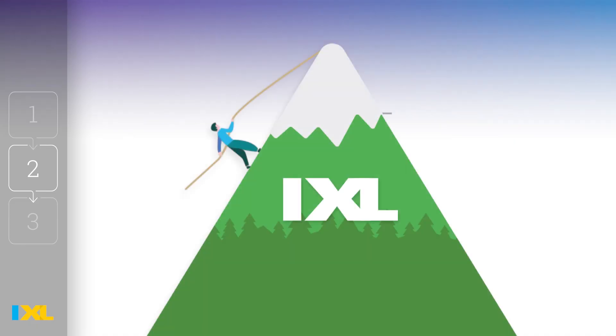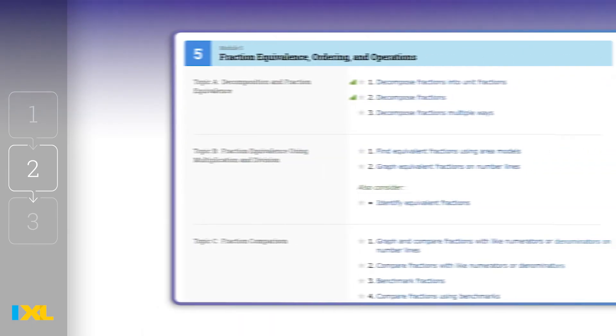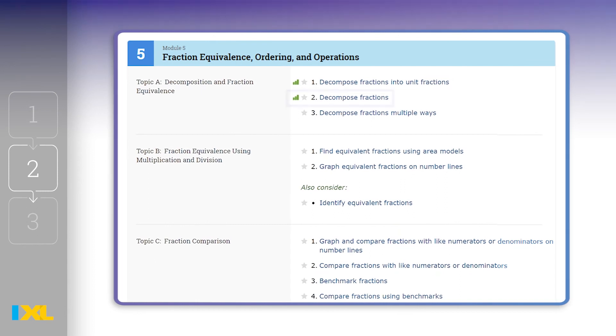Ask your students to reach a smart score of 80 on this skill. A smart score of 80 indicates proficiency and shows they have a good understanding of the topic. If any students finish early, encourage them to work on your second skill, Q2, as an enrichment activity.